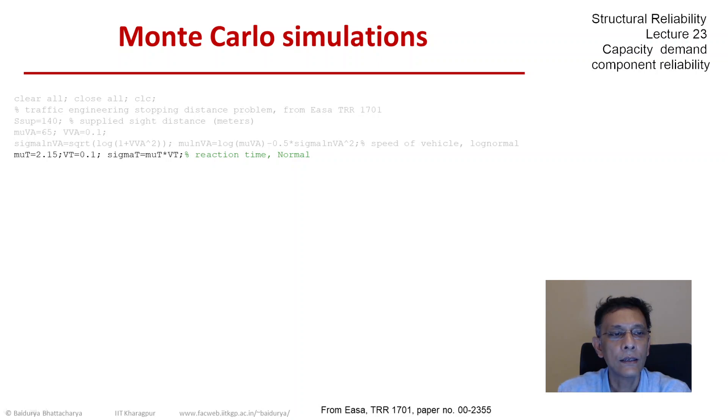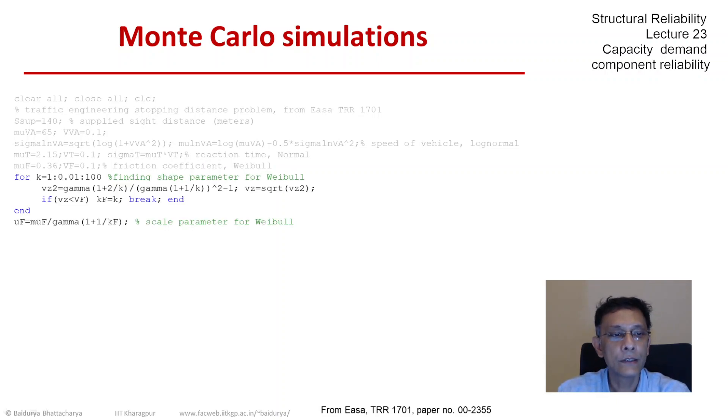So we have defined these lognormal parameters. Next, we define the parameters for T. Next, we define and then derive the Weibull parameters, which we just go through these few commands to get the U and the K, the shape and the scale parameters of the Weibull distribution.